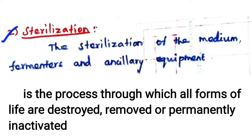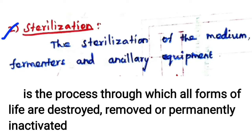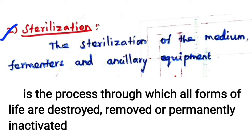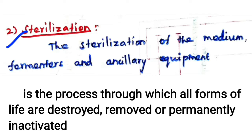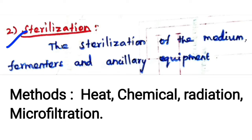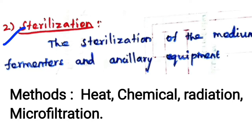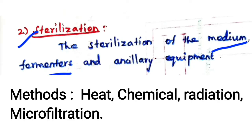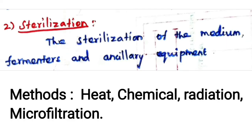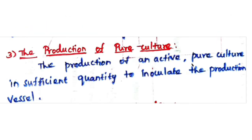The second step is sterilization. Sterilization is the process through which all forms of life are destroyed, removed, or permanently inactivated. We must sterilize the medium, fermenter, and ancillary equipment. Methods include heat — mostly moist heat or steam — chemical treatment, radiation, and microfiltration. Steam is widely used for sterilizing media, while microfiltration is used to sterilize air and heat-sensitive media components.